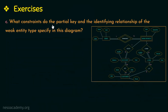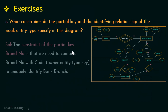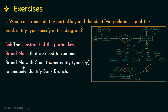The third question asks what constraints the partial key and identifying relationship specify. The partial key branch number must be combined with the key attribute of the strong entity type that it has an identifying relationship with. The weak entity type bank branch identifies its relationship with the strong entity type bank, so branch number must be combined with bank's key attribute 'code' — the owner entity type key — to uniquely identify bank branch.